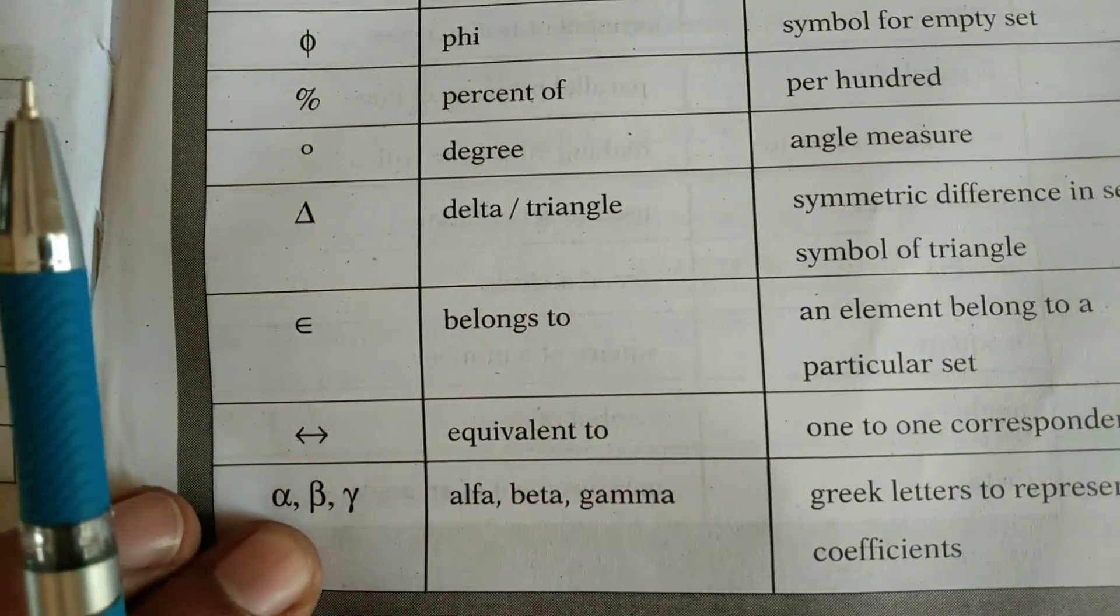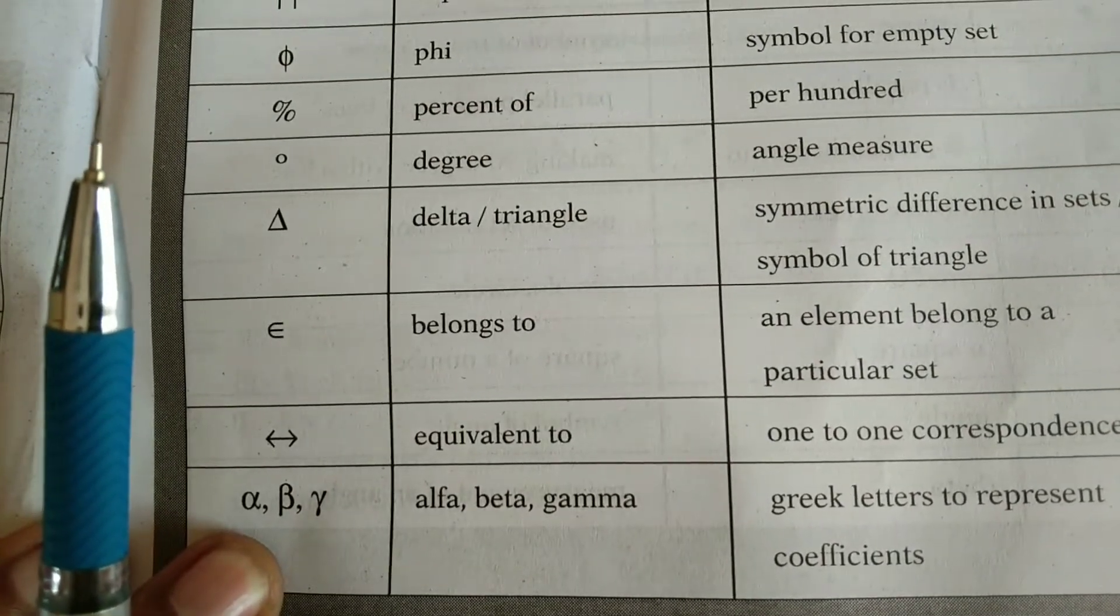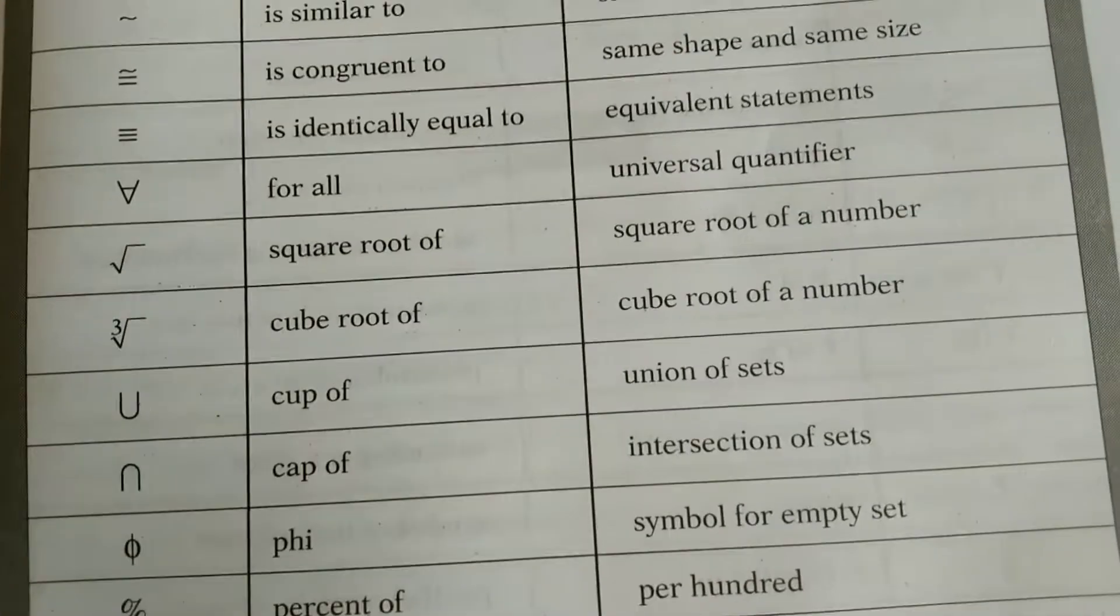And last one is alpha, beta, gamma. They are the Greek letters to represent coefficients.